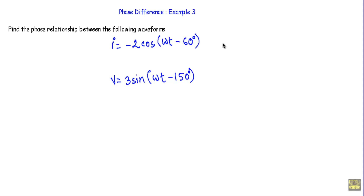In this video, I will show you another example of phase difference. This will be the third example of phase difference. Here we have to find the phase relationship between I and V, where I is equal to minus 2 cos(ωt - 60°) and V is equal to 3 sin(ωt - 150°).